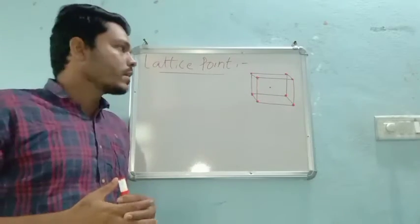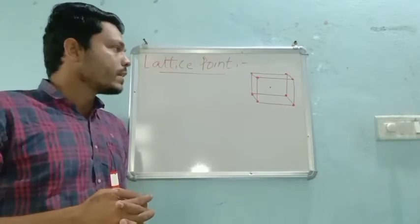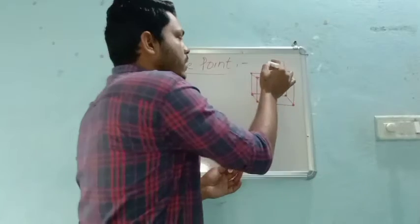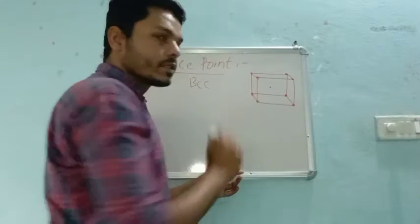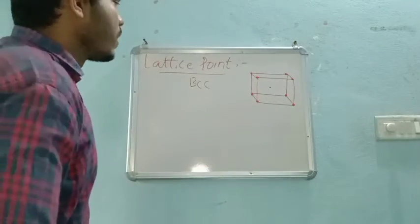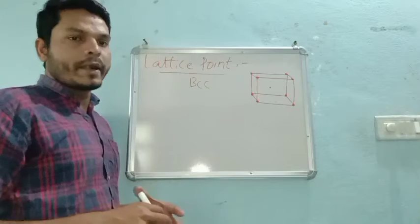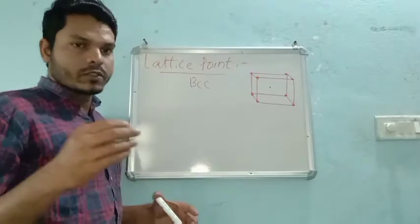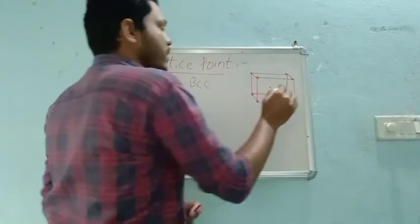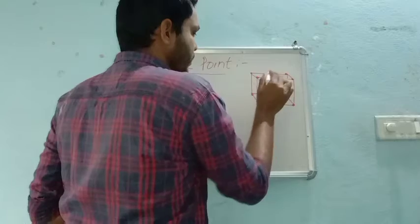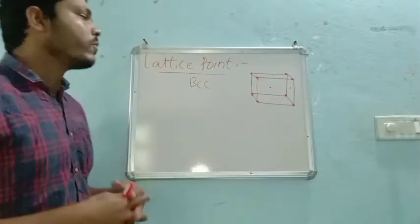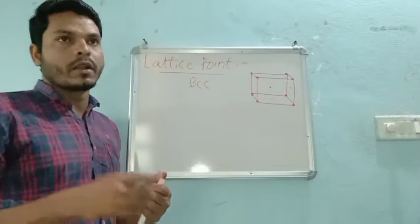If the constituent particle is present at the center of a unit cell, such unit cells are called body-centered, like BCC — that means corner plus one atom at the center. In FCC, constituent particles are present at the corners and also at the center of the faces. If atoms are at the corner as well as at the face centers, those unit cells are called FCC type.